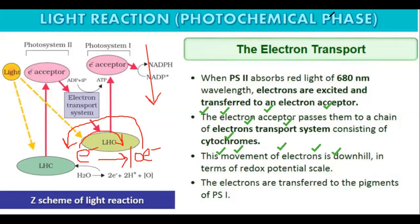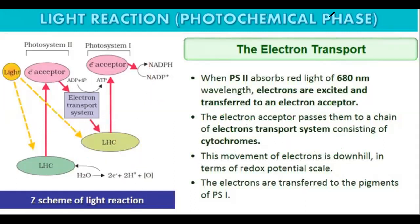The electrons are transferred to the pigments of PS1. So where are the electrons transferred? From PS2, the electrons are transported into PS1, and finally the electrons reach PS1.